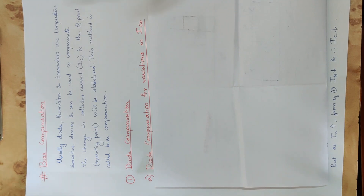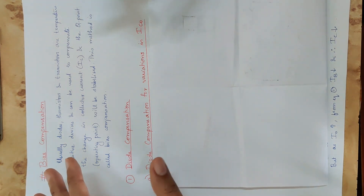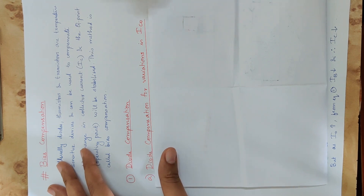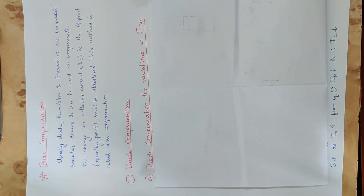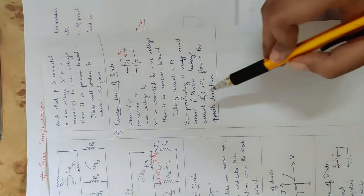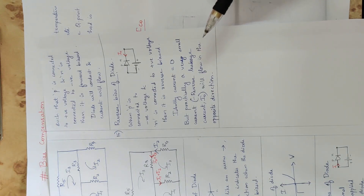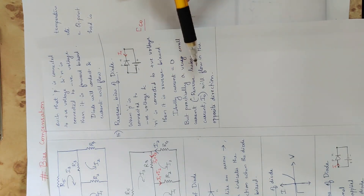A diode can be forward biased or reverse biased. ICO is the leakage current. So if we want to compensate this leakage current, we will use another leakage current — that is the diode's reverse leakage current. We will try to make reverse leakage current flow to achieve compensation.